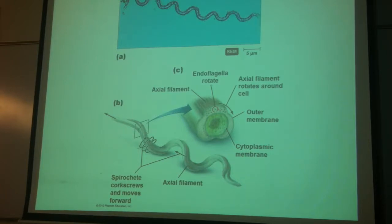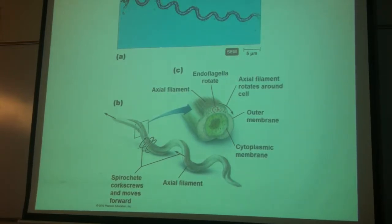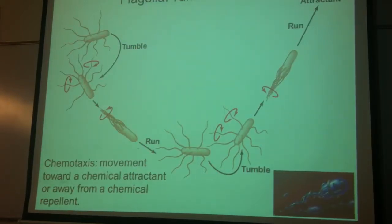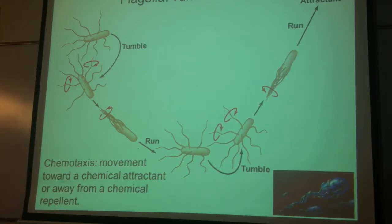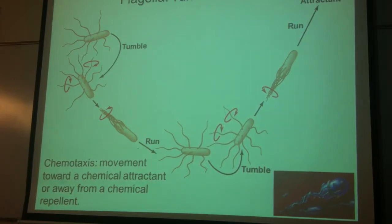So what is tumble and run? When the flagella are not operating as a unit, but basically flailing around just to move — that's tumbling. And a run is when they twist together and kind of propel forward. It's basically how they can try and cover more ground. Tumble: they flail and go somewhere new, pointing in a new direction. Run: they all work together, pick up speed, and the flagella make the cells move.